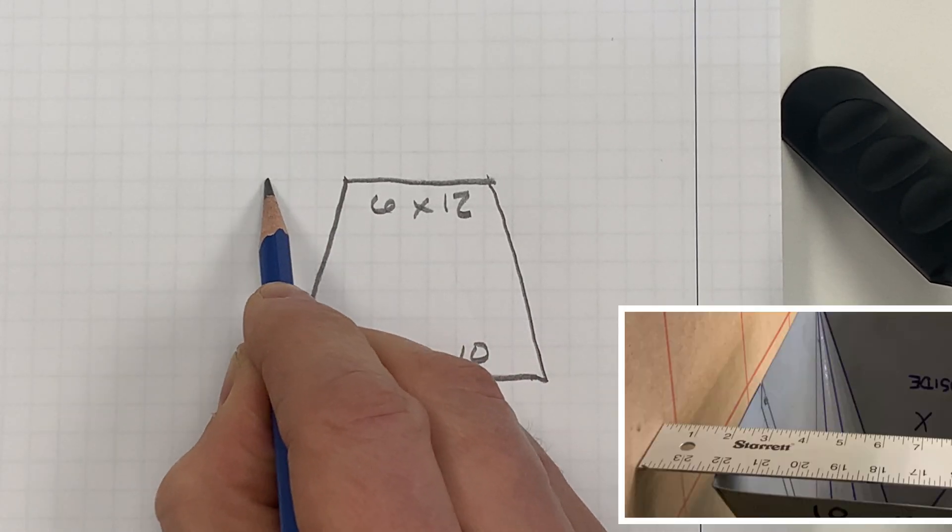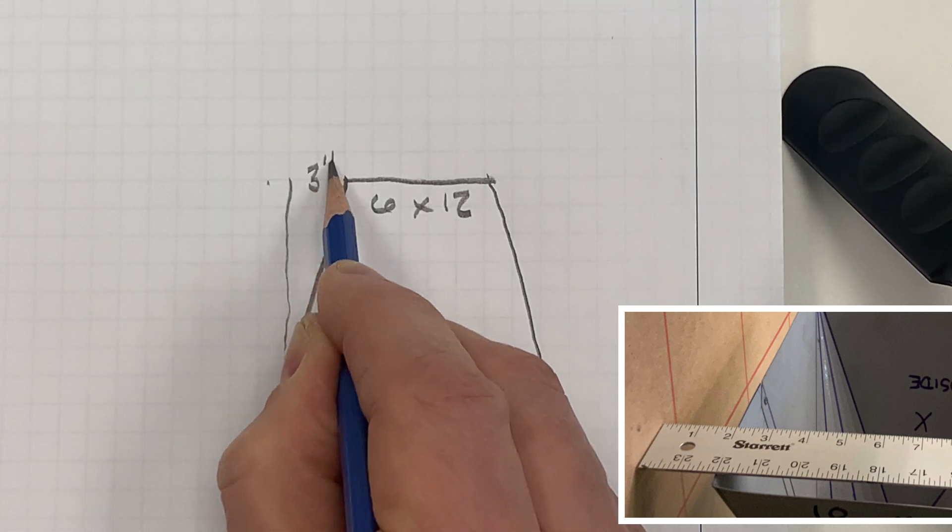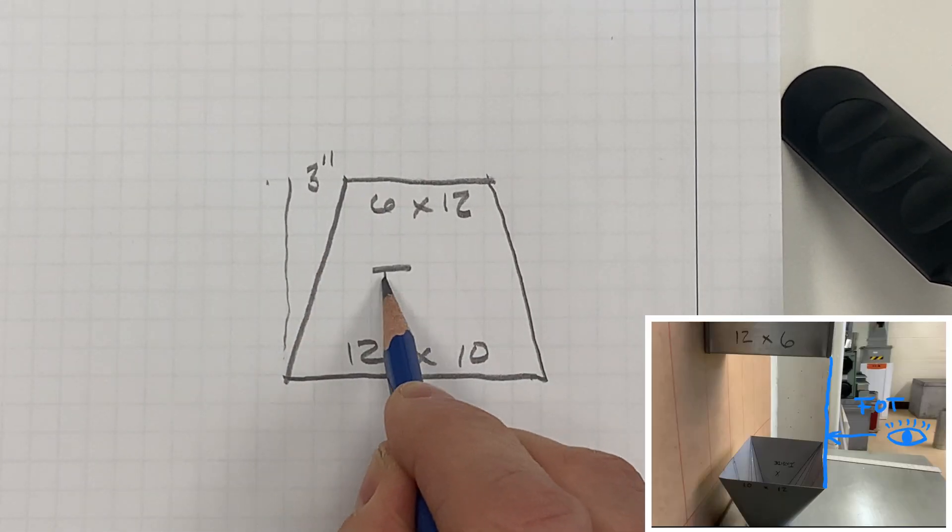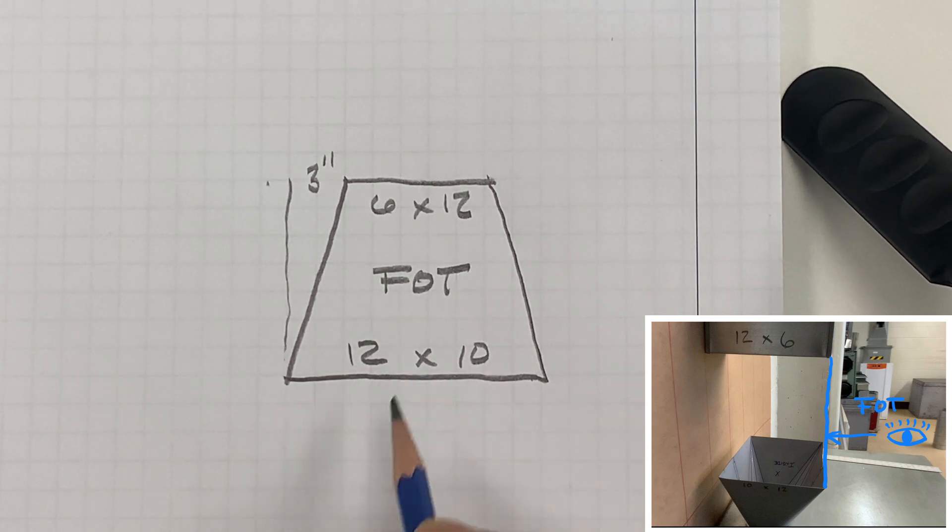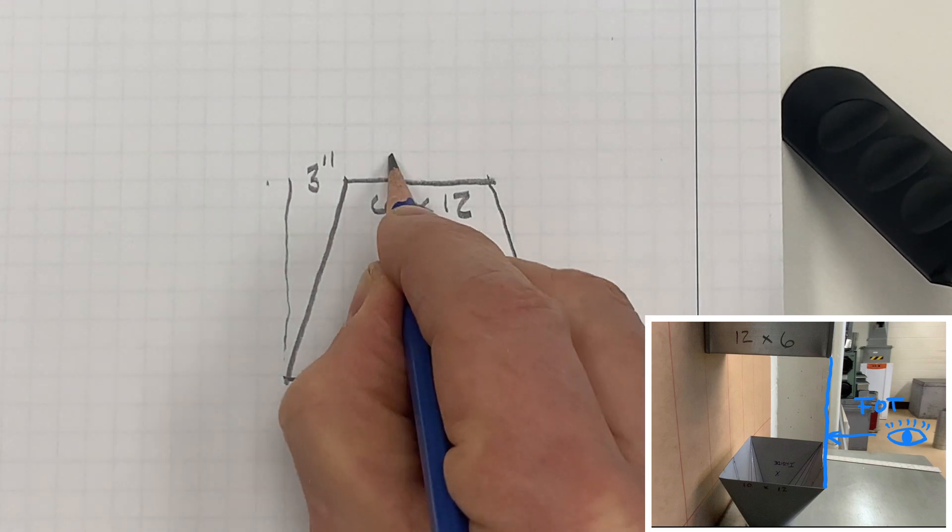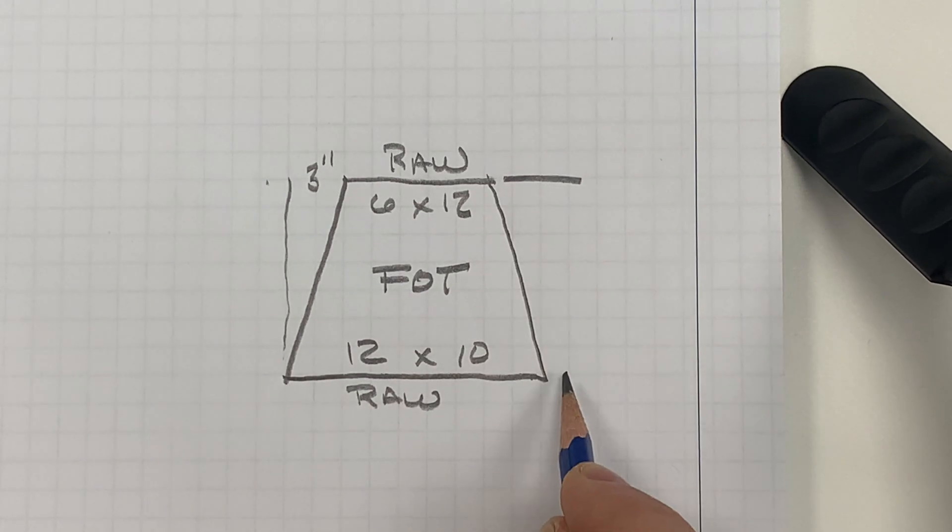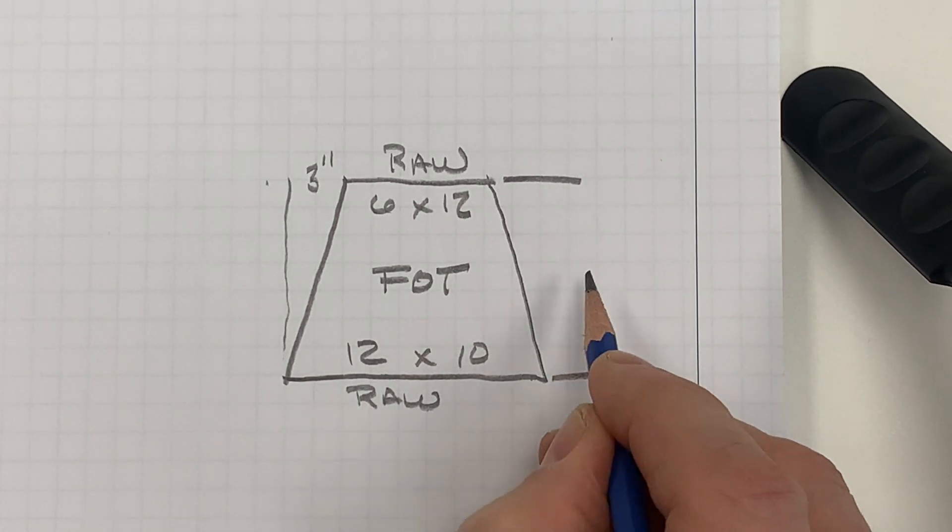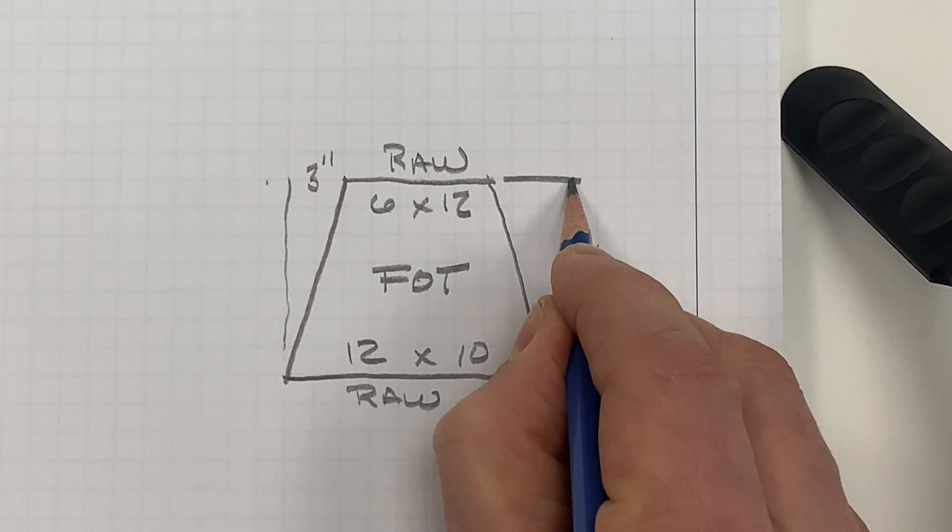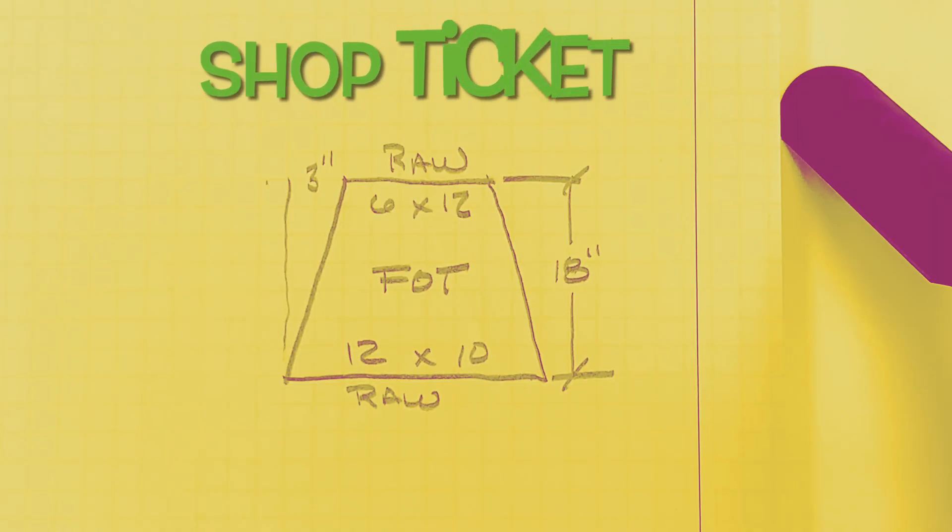And in this scenario, the bottom duct, the 12 by 10 duct, was two inches away from the wall, making this front piece flat, so therefore flat on top. Now this is your final finished shop ticket.